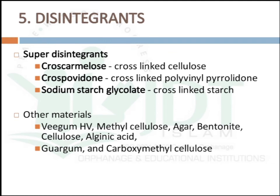Super disintegrants are disintegrating agents that disintegrate the tablet within one to two minutes. Examples are croscarmellose (cross-linked cellulose), crospovidone (cross-linked polyvinylpyrrolidone), and sodium starch glycolate (cross-linked starch). Other materials that can be used as disintegrants are guar gum, methyl cellulose, agar, bentonite, cellulose, alginic acid, gorgum, and carboxymethyl cellulose.